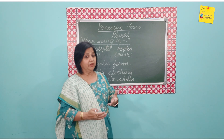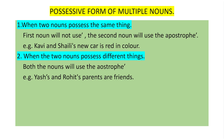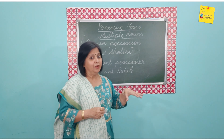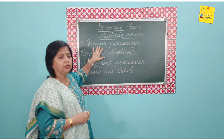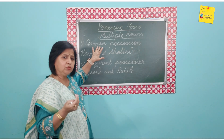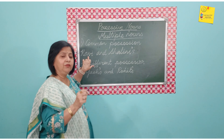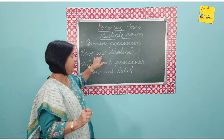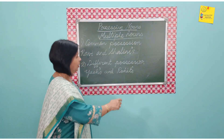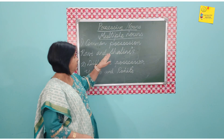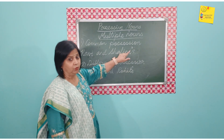Now let us look at the possessive form of multiple nouns — more than one noun in the subject. When there is a common possession — two persons or animals owning the same thing — the first noun remains as it is and only the second noun takes an apostrophe S. For example, Kavi and Shalini's new car is red in colour — the red car belongs to both Kavi and Shalini.